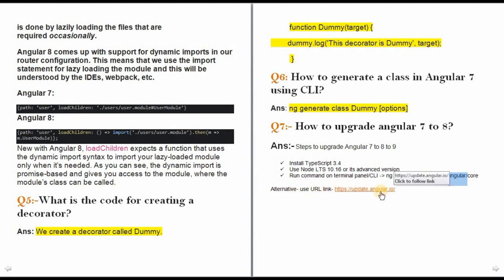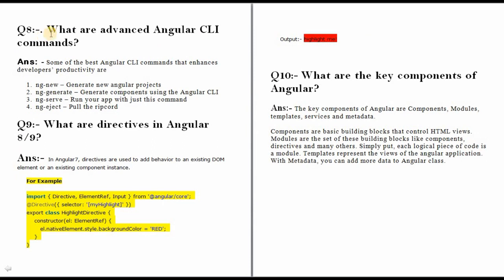You can visit the alternative URL directly for more details. Question number 8: what are the advanced Angular CLI commands that enhance development productivity? First, ng new — generates a new Angular project. Second, ng generate component — using Angular CLI. Third, ng serve — runs your app. Fourth, ng eject — pulls a special type of package configuration.